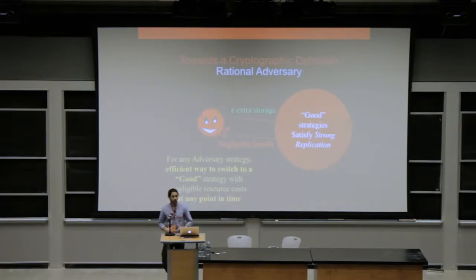That brings us to a rational adversary definition of security, which is very common in proofs of space. This is roughly saying that the adversary, it doesn't cost the adversary anything extra to just store the files that they're planning to store. A good strategy satisfies this strong replication notion, that they're actually storing the bits of the file that they claim to be storing. And for any other adversarial strategy, there would be an efficient way to just switch to being a good adversary.